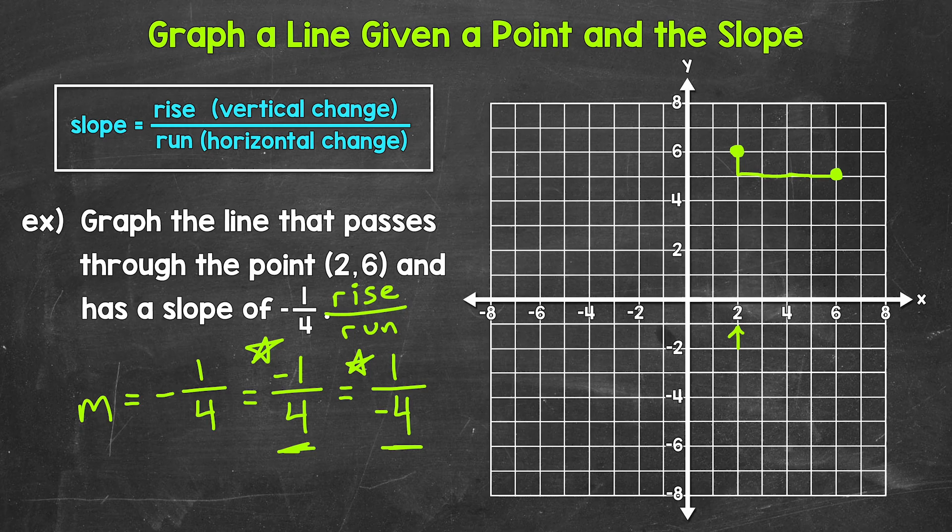Our rise here is positive 1. So we go up 1, so up 1 unit. And then our run is negative 4. That means we go to the left 4 units. So 1 unit, 2 units, 3 units, 4 units. And we plot our point.